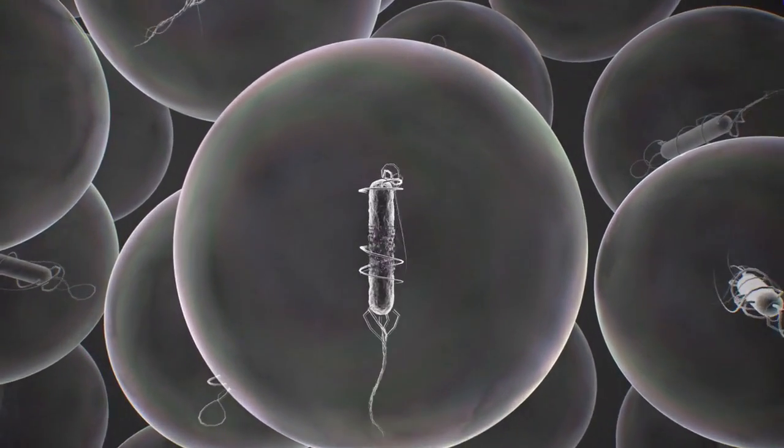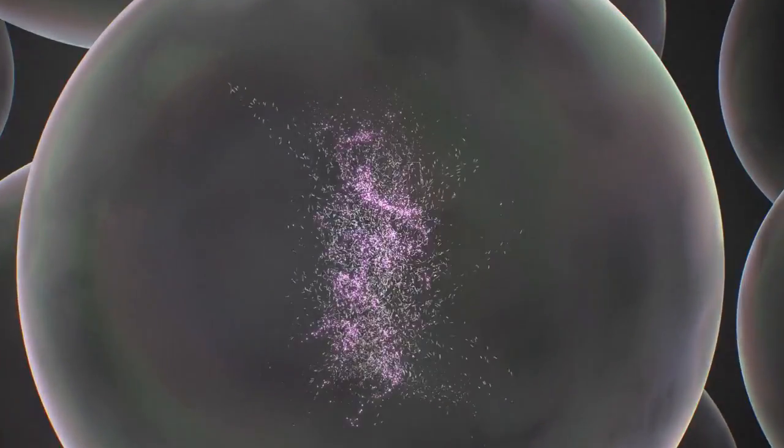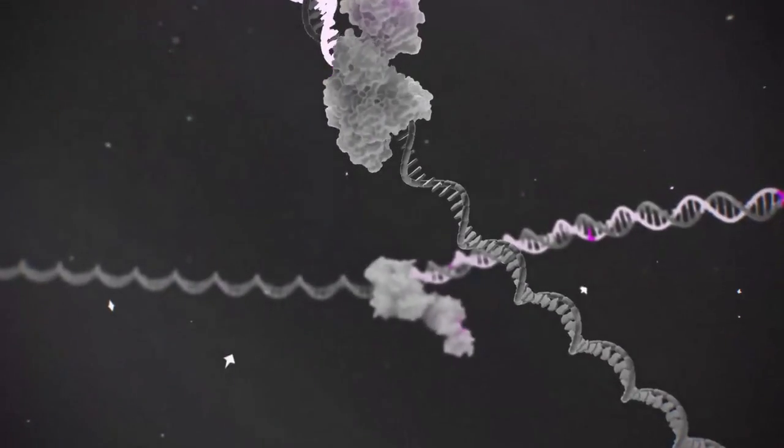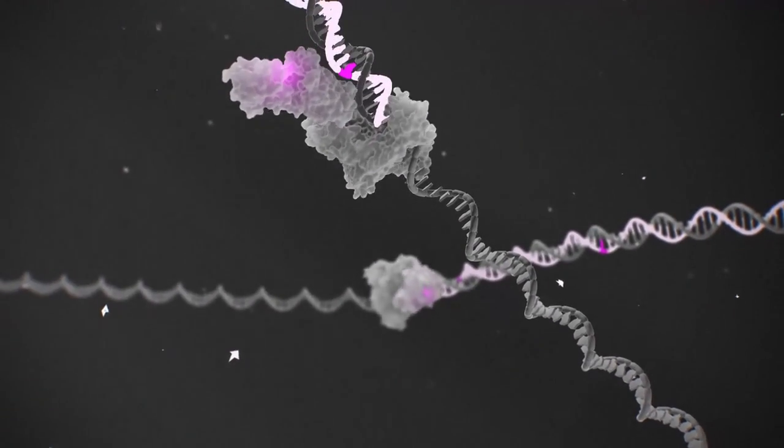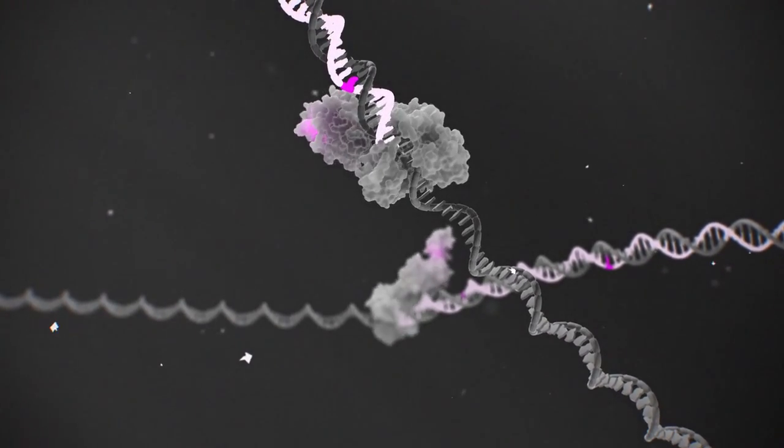We burst the E. coli cells with heat, releasing the thermostable TAC variants into the droplets. Each droplet becomes a micro-reactor where the most fit polymerase variants copy more of their own DNA. Millions of these reactions occur simultaneously.